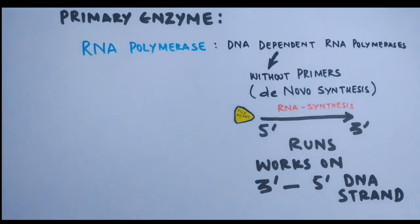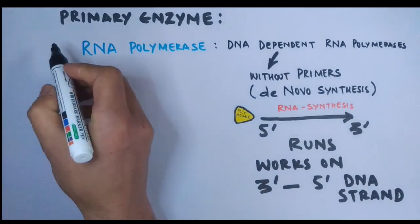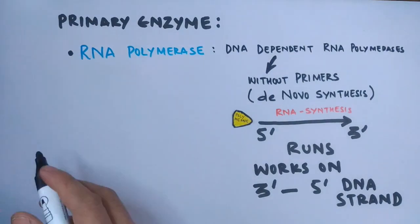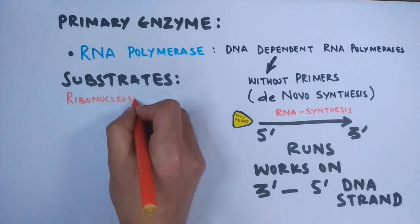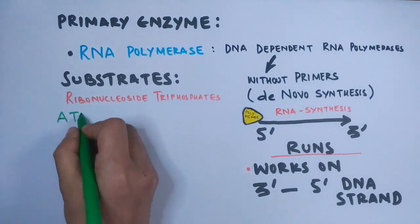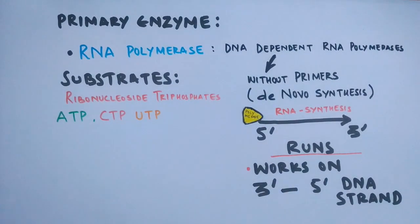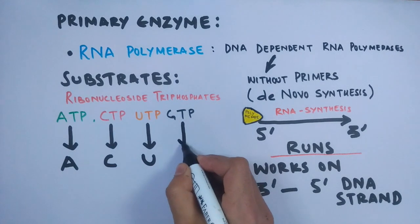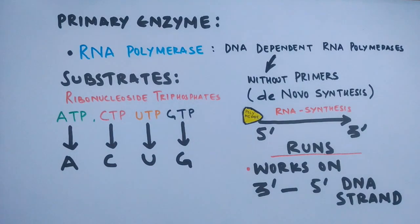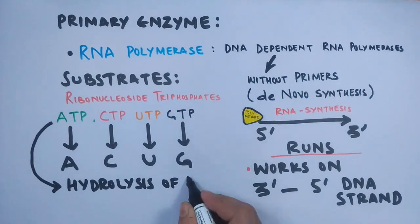The requirements for transcription include substrates like ribonucleoside triphosphates: ATP, CTP, UTP, and GTP. All four substrates will provide their respective bases in the form of adenine, cytosine, uracil, and guanine. The hydrolysis of NTPs provides the energy to drive transcription.